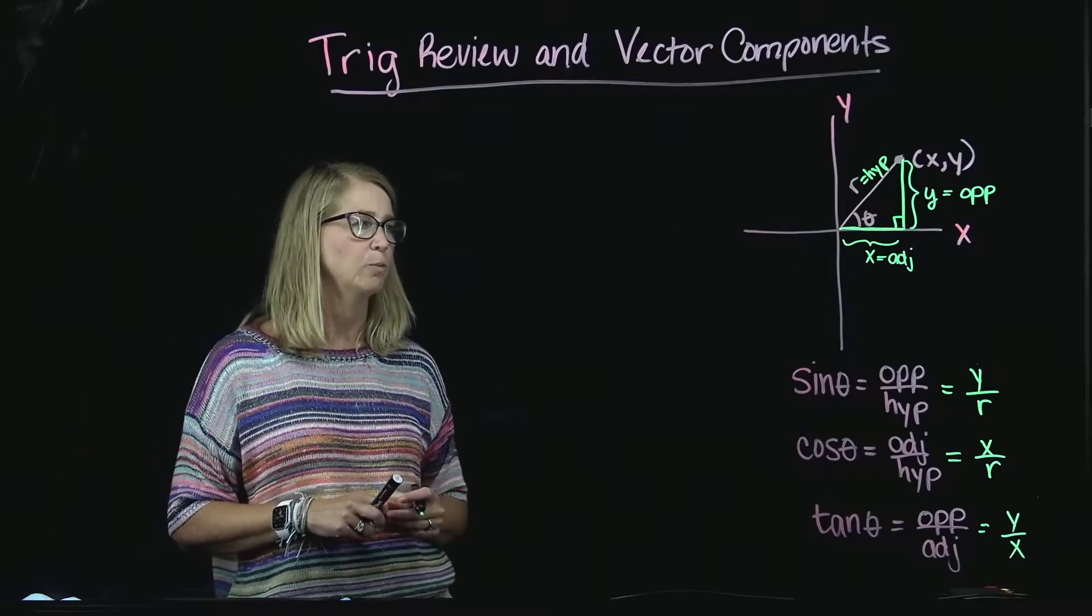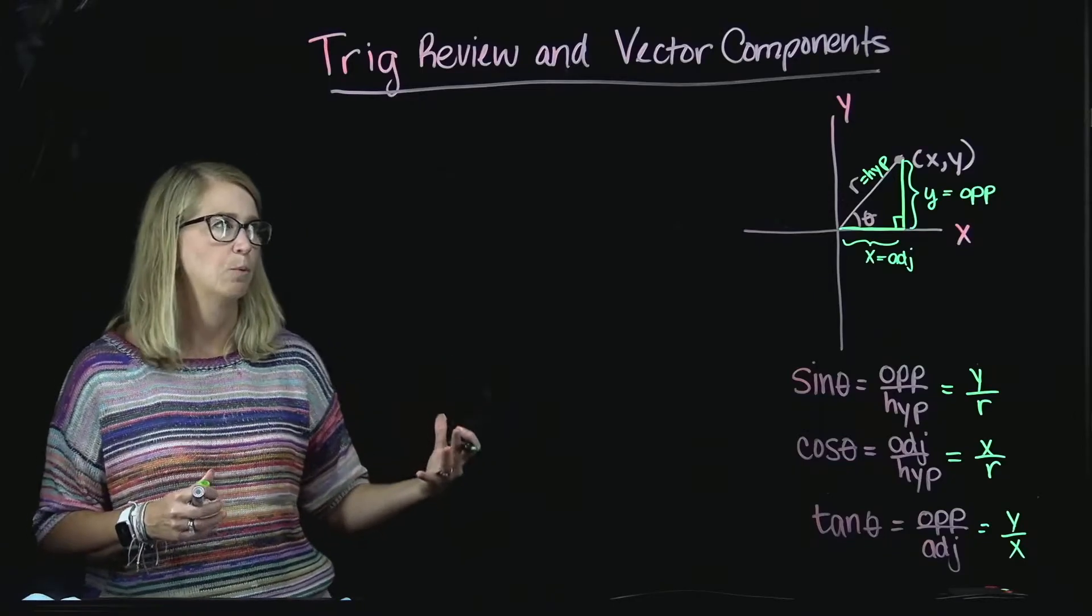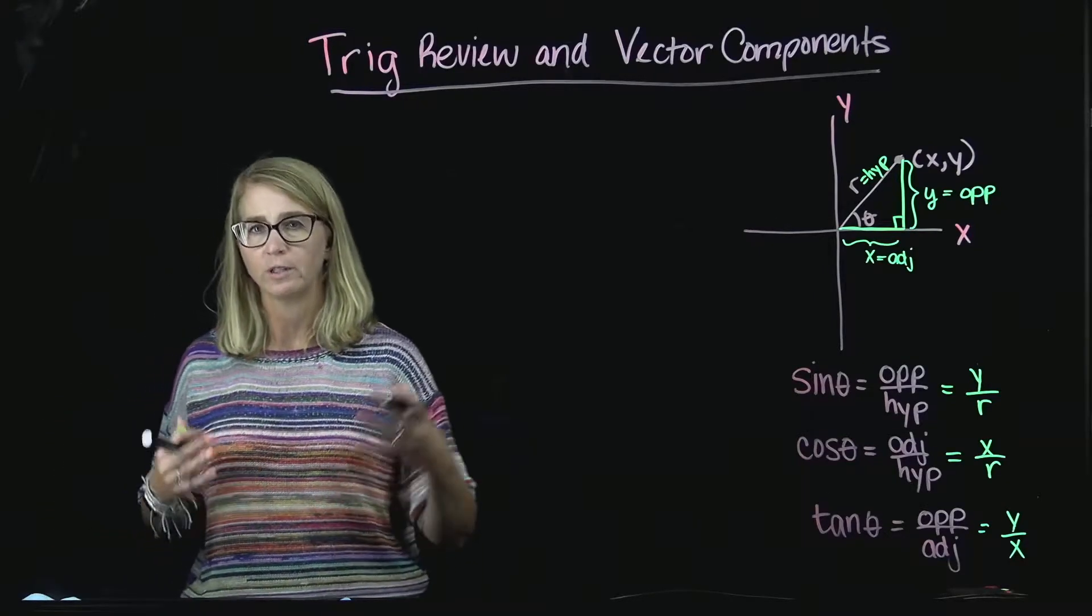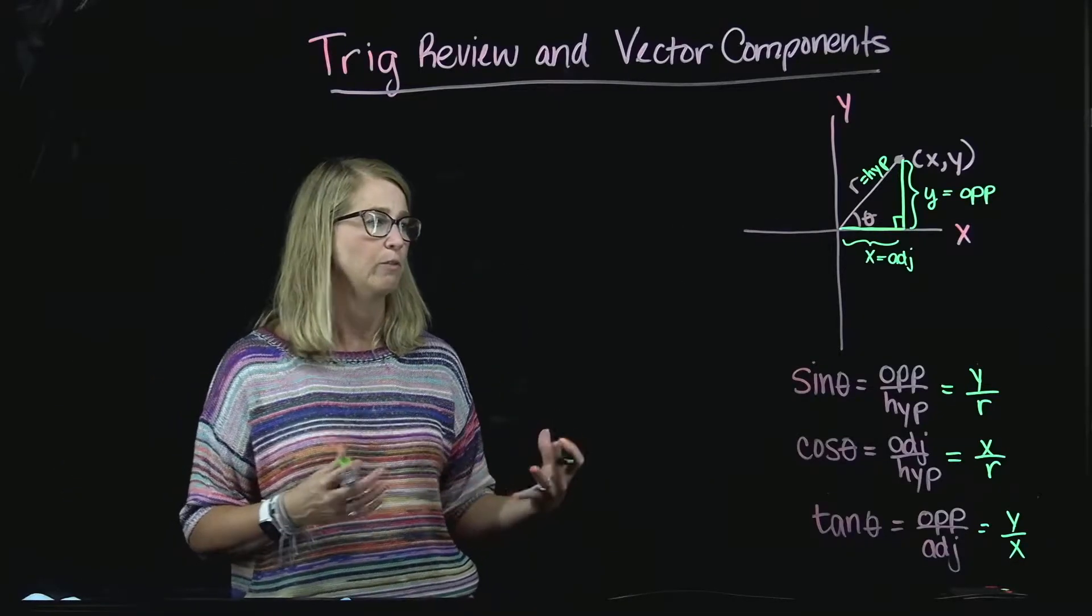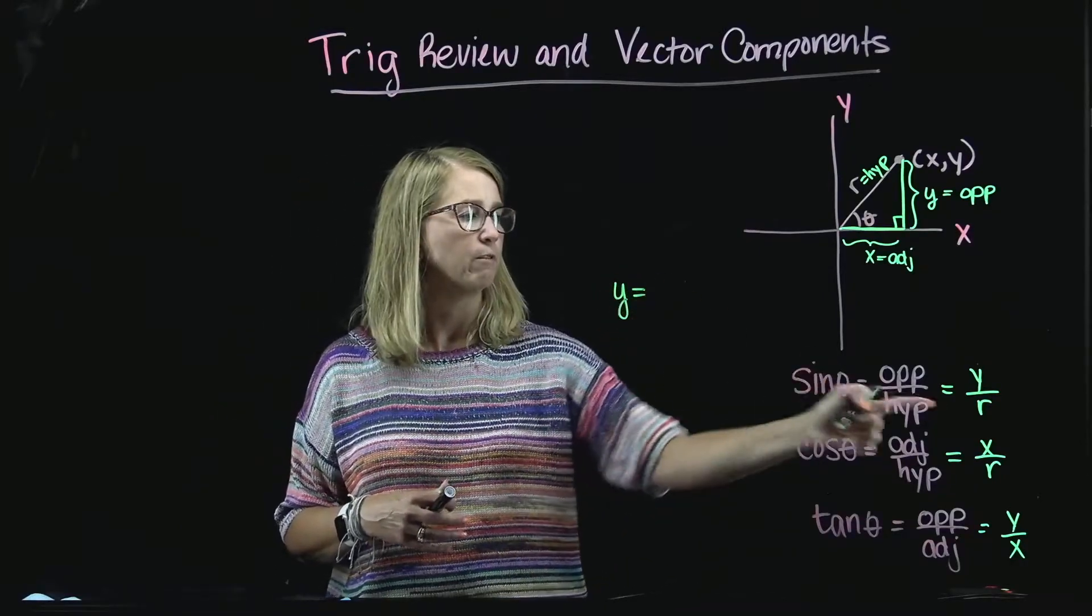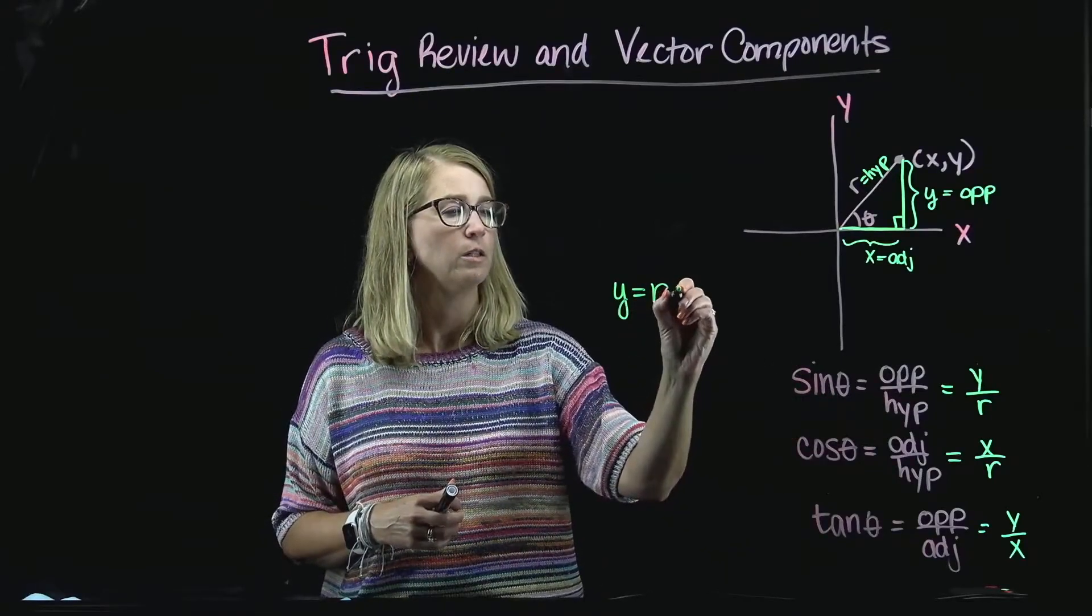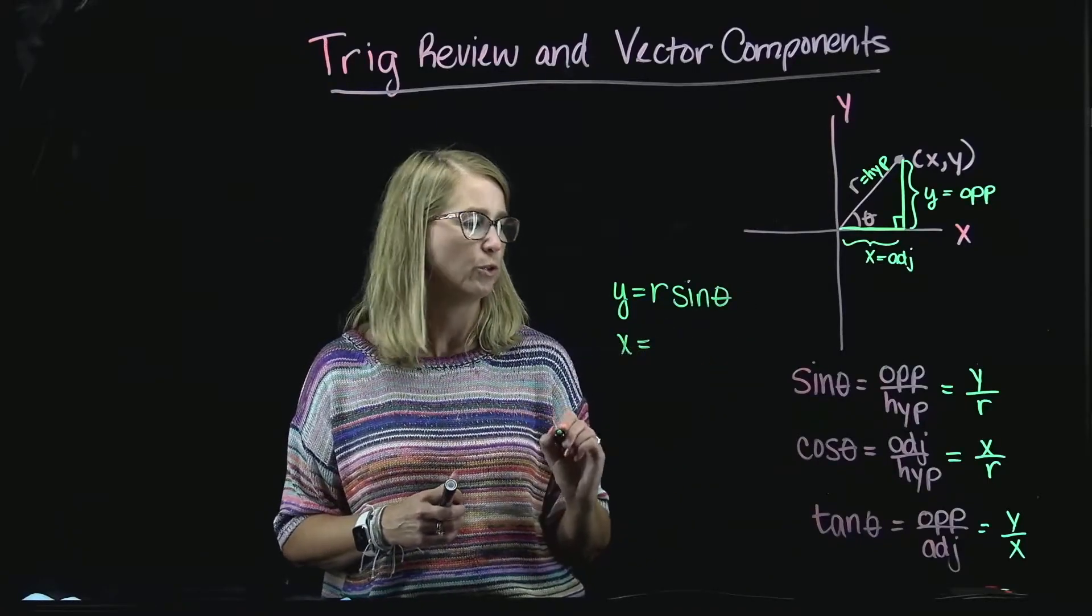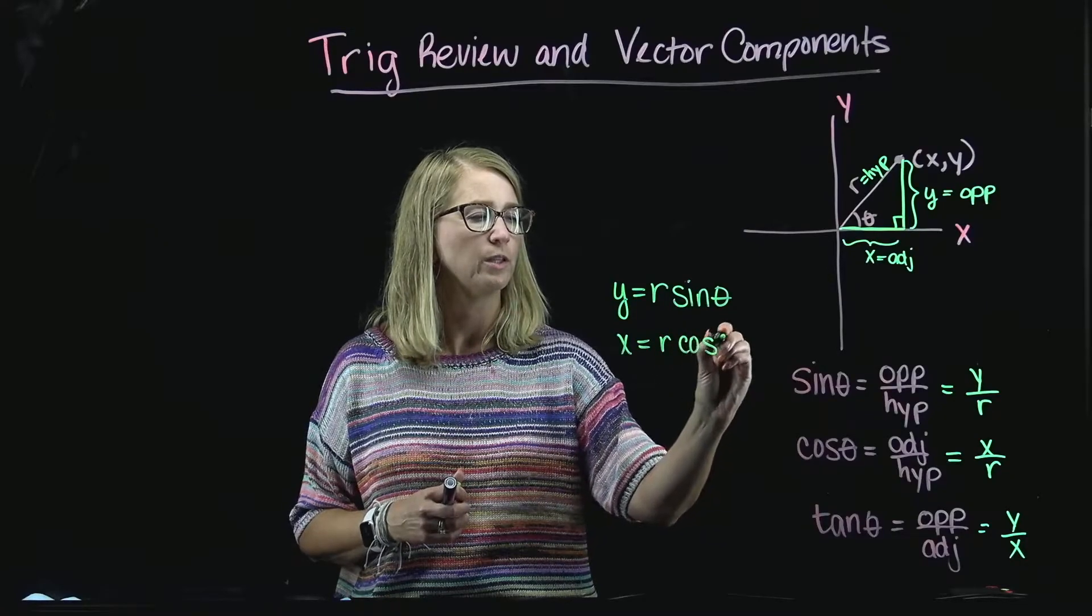And so, you might remember that if you were given a point in the XY plane, but you were given its location using the radius factor and the angle, you could find the Y coordinate by rearranging this expression, and you would say it was R sine theta, and X would be equal to R cosine theta.